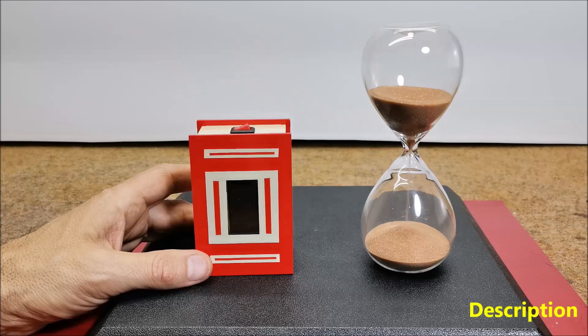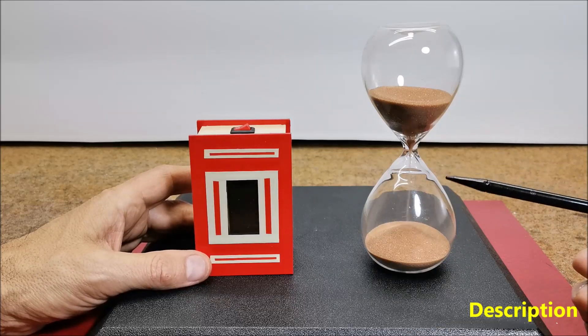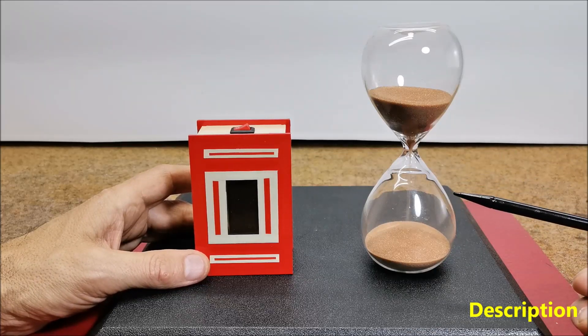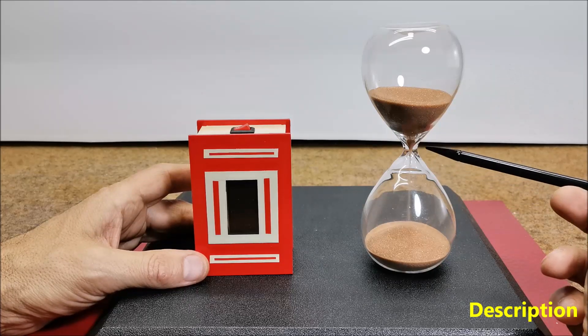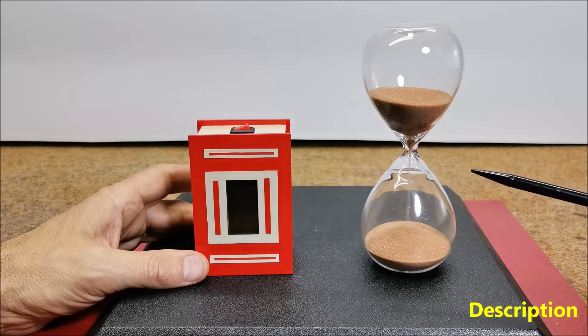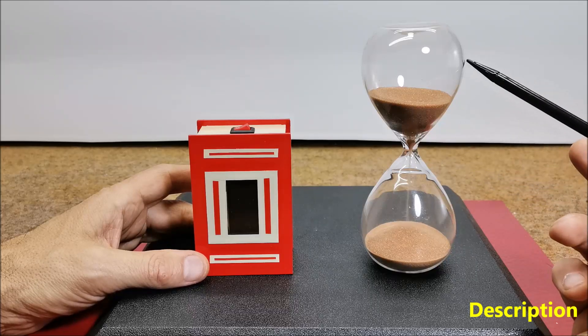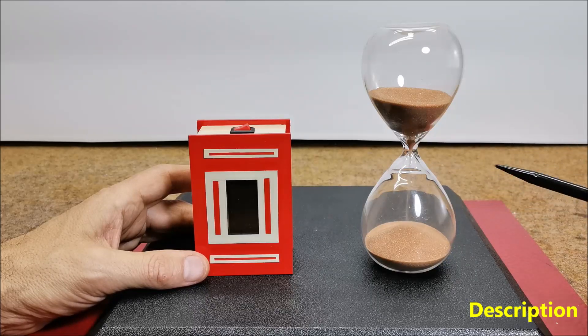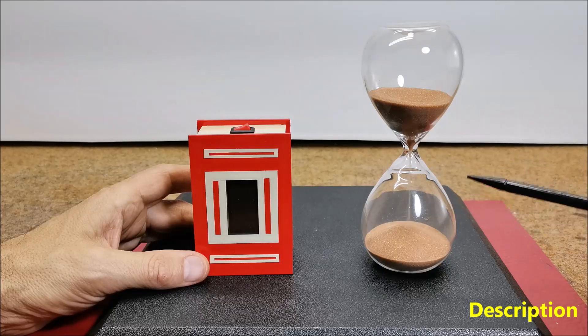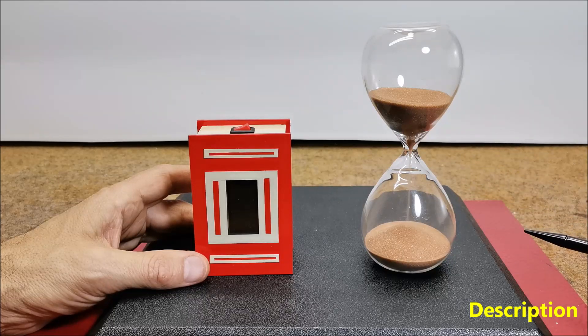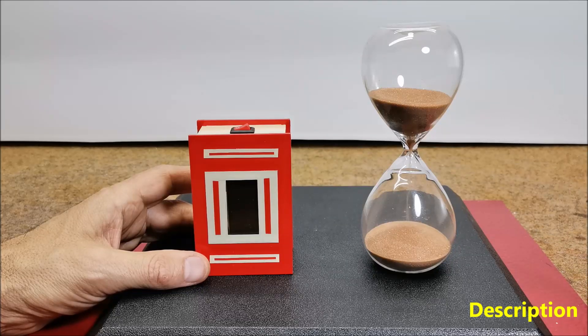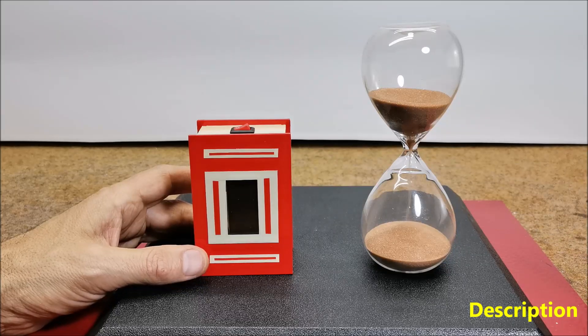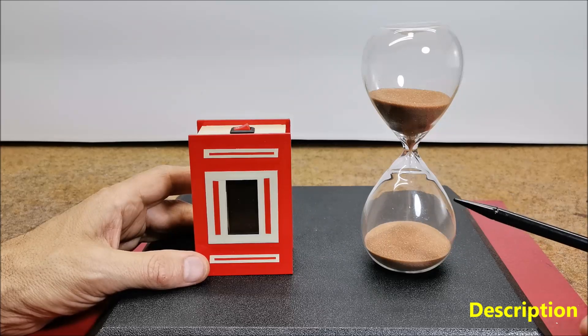Hello, an hourglass, also known as sand clock, is a device used to measure the passage of time. It consists of two glass bulbs connected by a narrow neck through which sand flows from the upper bulb to the lower one. The flow of sand is controlled so that it takes a set amount of time to completely empty the upper bulb. Hourglasses are often used as time management tools and decorative items.